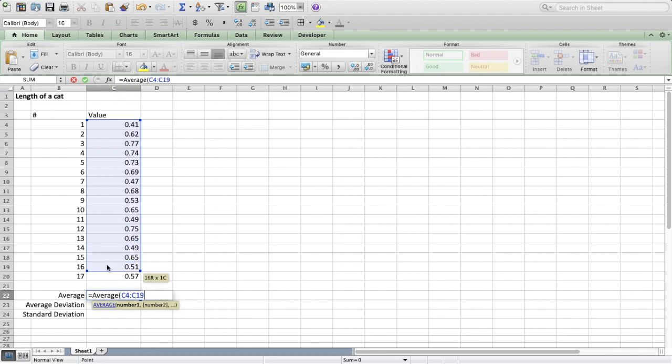So as you see I simply type average and then I mark all the values. So from C4 to C20 I want Excel to calculate the average. And hit enter, that's done.